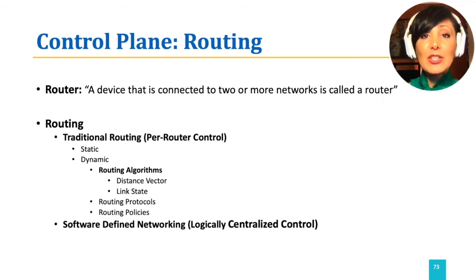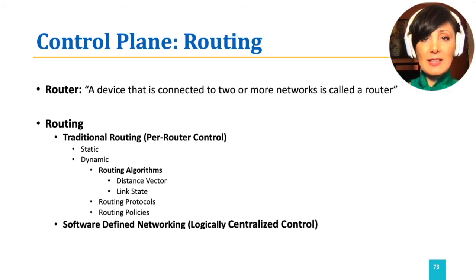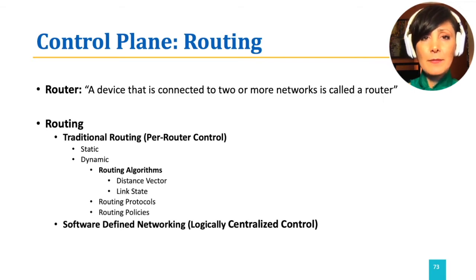In traditional routing, we can either have static routing — defining routes that do not change in each router — or run algorithms that define them dynamically. Routing algorithms could be classified into two main categories: distance vector or link state. We will first explore traditional routing and start by learning routing algorithms.